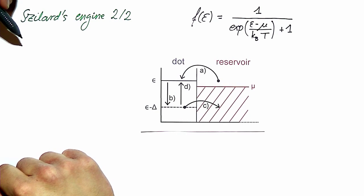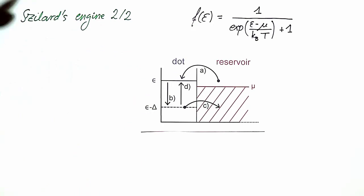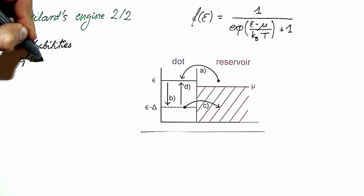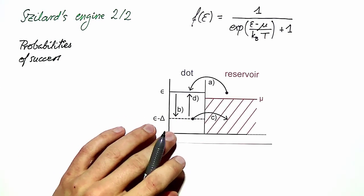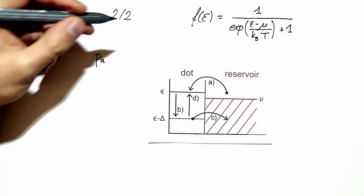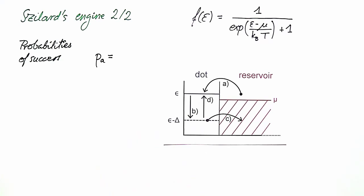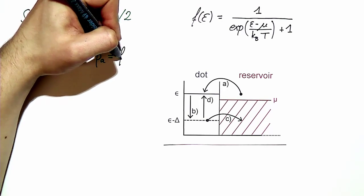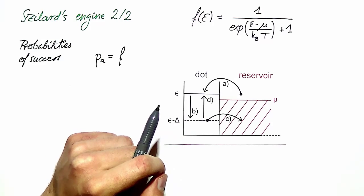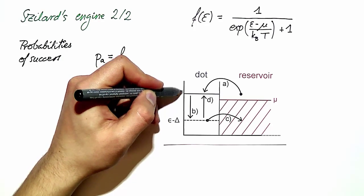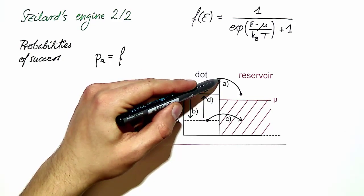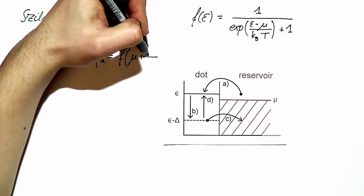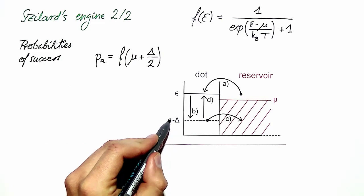So we can write down the probabilities of having a successful measurement in step A and step C. The probability of success in step A is the probability of finding an electron at this energy in the reservoir, which is simply F evaluated at the energy epsilon of the dot. To simplify the analysis, since we have the freedom of choosing where the dot level is, we can choose to drive the dot level symmetrically about the electrochemical potential mu, so that the energy here is mu plus delta over 2, and the other energy is mu minus delta over 2.